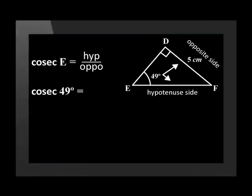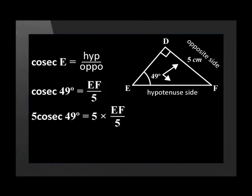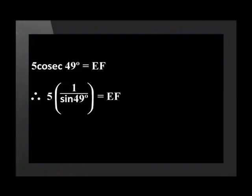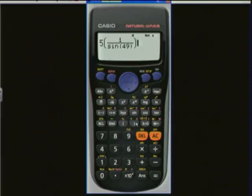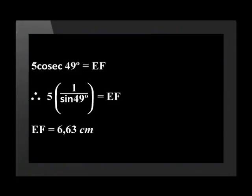The reciprocal of sine is cosec. Therefore, cosec of 49 degrees equals EF over 5. By multiplying both sides by 5, we get 5 times cosec 49 equals EF. At this point we would usually use our calculators, but if we look at the calculator there is no cosec button. This means we need to change cosec to its reciprocal, sine. Cosec 49 degrees has the same value as 1 over sine 49 degrees. Pressing 5 bracket 1 divide by sine 49 on our calculator gives us a value of 6.63 centimeters. Therefore, EF is 6.63 centimeters.